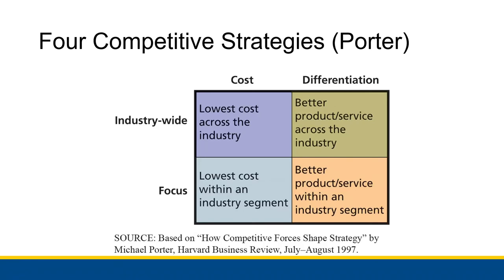Michael Porter identified four general competitive strategies that all business competitive strategies fall into, based on two axes. The first axis is cost versus differentiation. Cost refers to having a lower cost product — kind of like the cereal example. If you have a lower cost product, customers might flock to you.